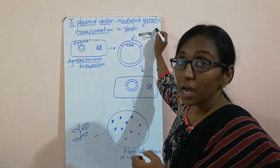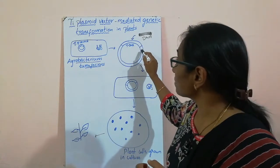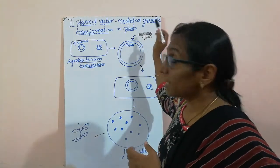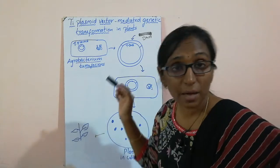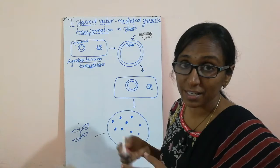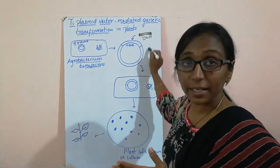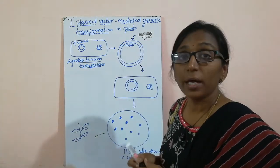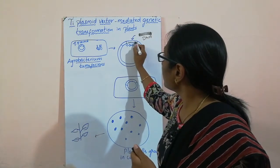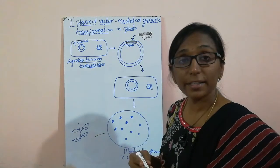Now we are ligating our desired DNA. First we isolate the vector from the bacterium — that is the Ti plasmid vector — and we isolate and cut our desired DNA. For example, take a stress resistant gene from plants which are able to tolerate stress. We use the same restriction endonuclease enzyme to cut our desired DNA as well as the vector.